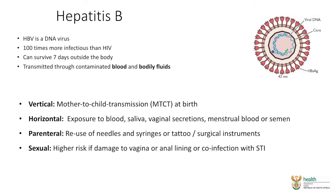Hepatitis B is a DNA virus. It is 100 times more infectious than HIV, and it can survive seven days outside of the body. Its structure assists us in the analysis of the disease itself. We can assess the levels of viral DNA, and depending on those levels, it can tell us which chronic phase the patient is actually falling into.